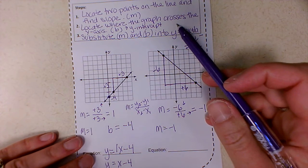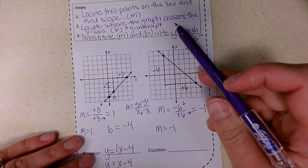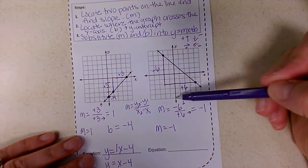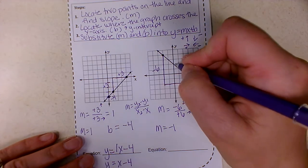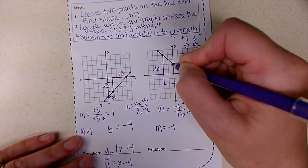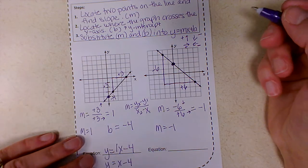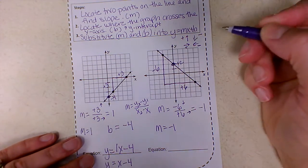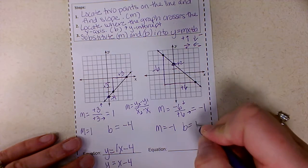Next I'm going to need to locate my y intercept. So I have to locate where the graph crosses the y axis. So here's my graph. Here's the y axis, and I'm going to locate the point crosses right here. So let's see where that is. This is positive one. This is positive two. So it's at positive two. So B equals positive two.